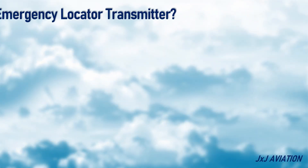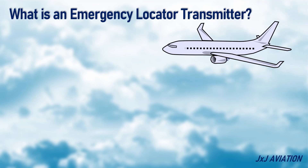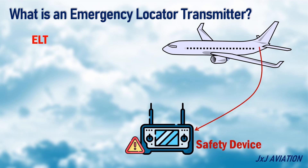First, let's understand what is an emergency locator transmitter, or ELT. An ELT is a crucial safety device installed in most aircraft. When an ELT is activated, it will send distress signals on specific frequencies.